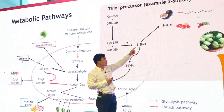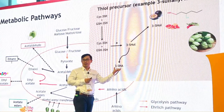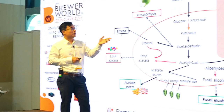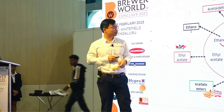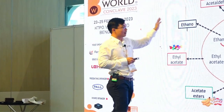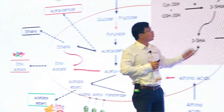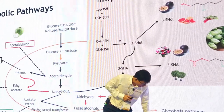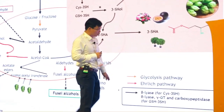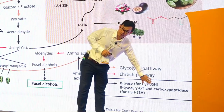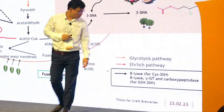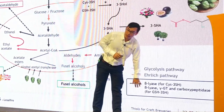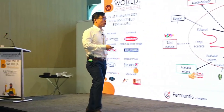The thiol is going to be S-acetylated to become the acetate form — even stronger, with a lower threshold and different top notes, producing more passion fruit. For the cysteine-bound precursor, only one enzyme is needed: beta-lyase — which cuts the bond to release the thiol. For the glutathione-bound precursor, it is harder to release because three enzymes are required. It is more complex and harder to release.